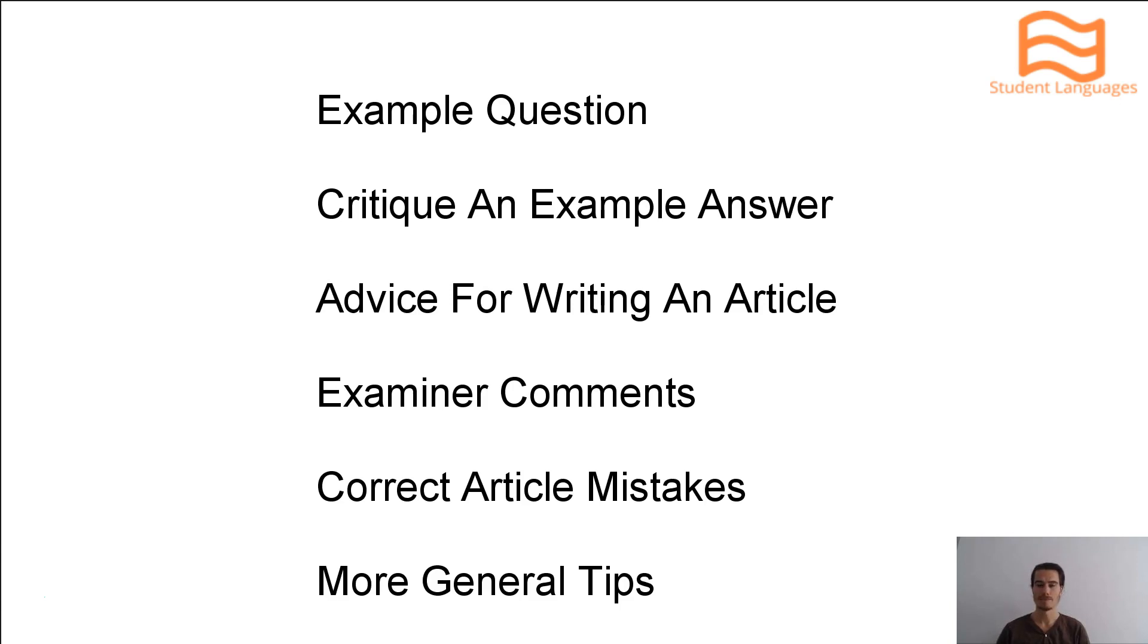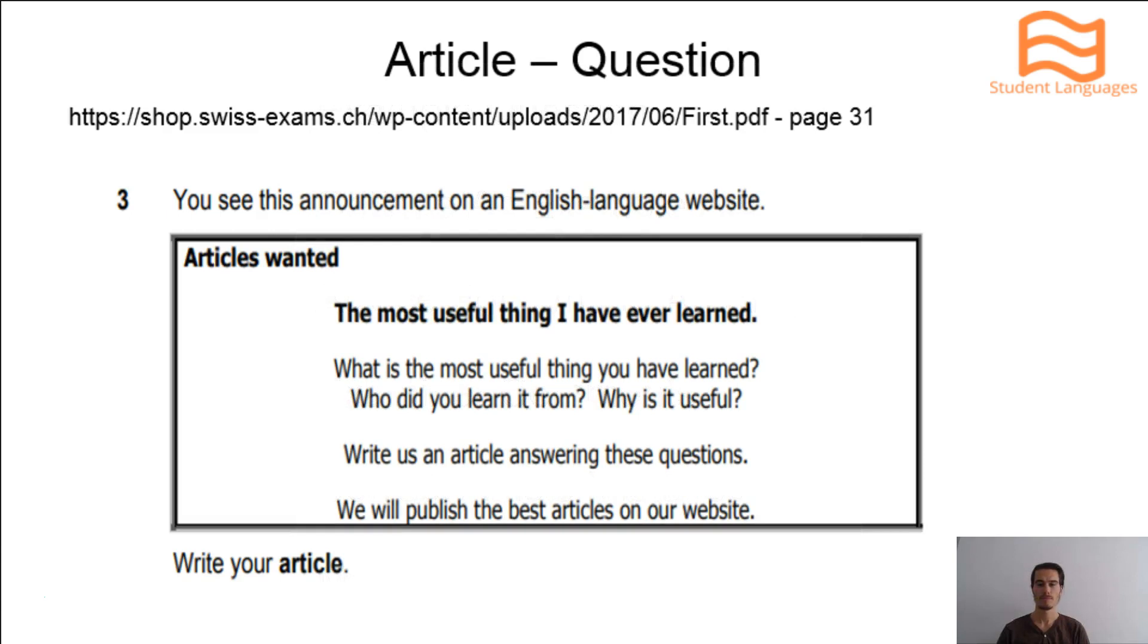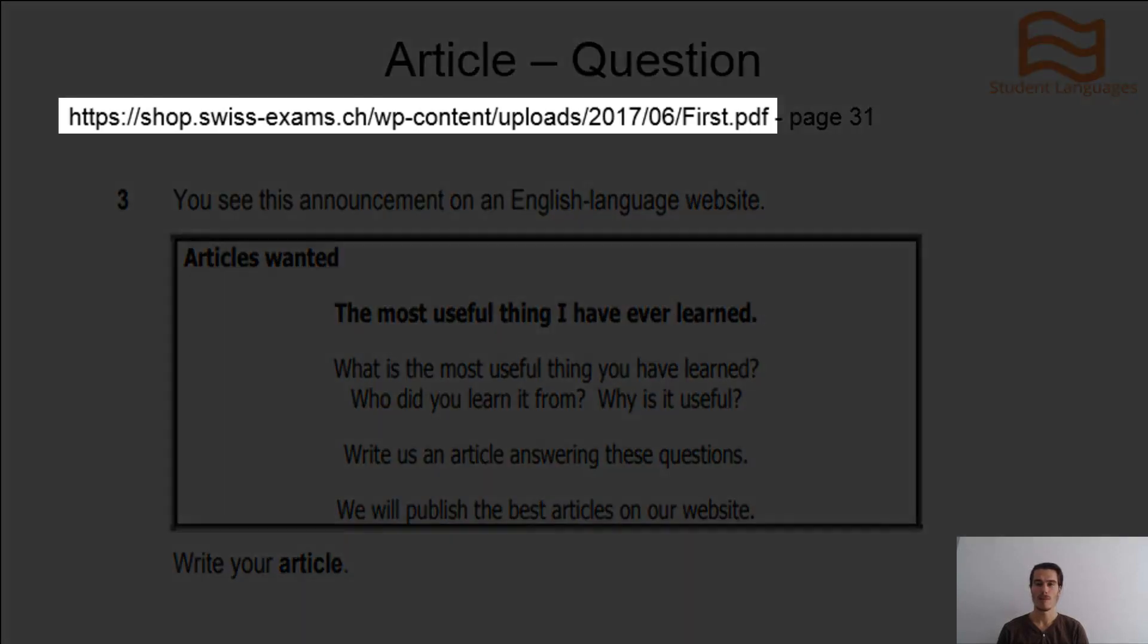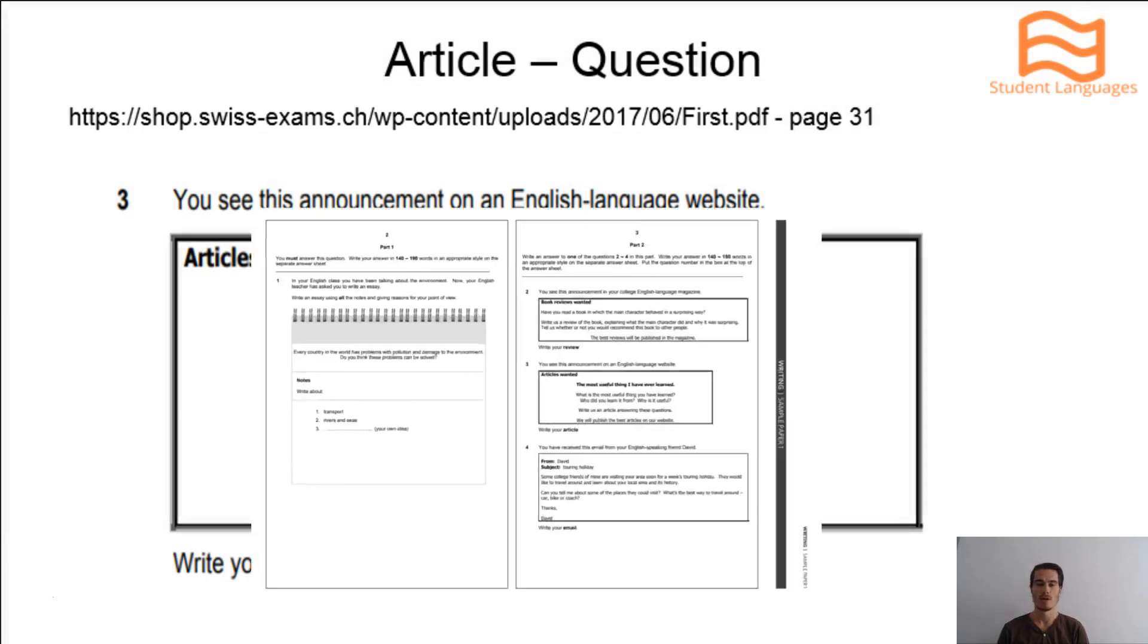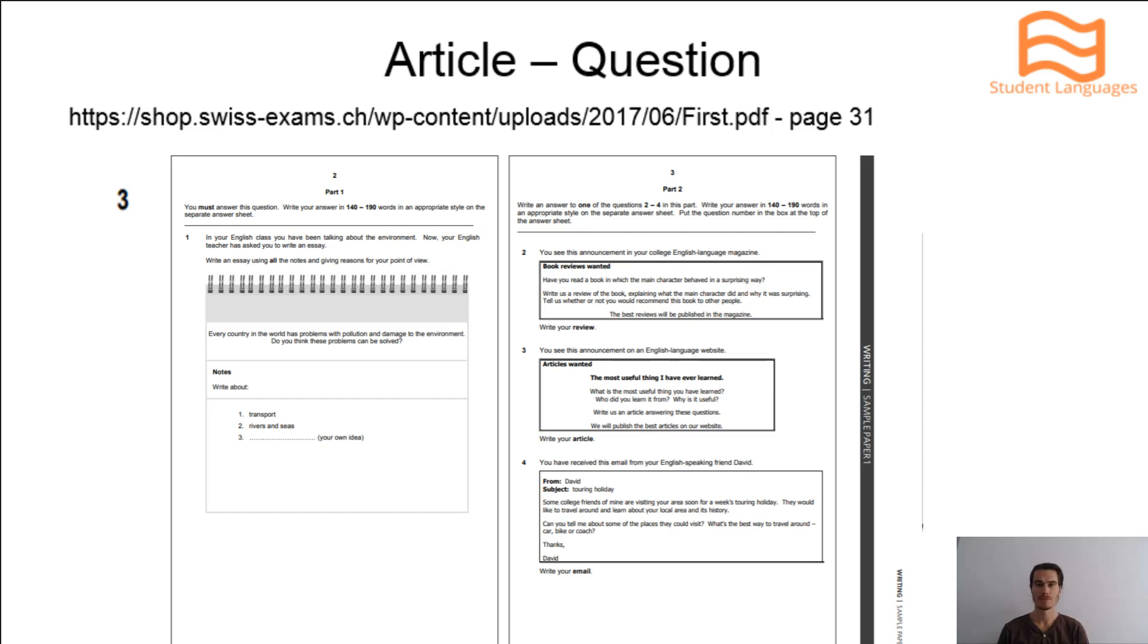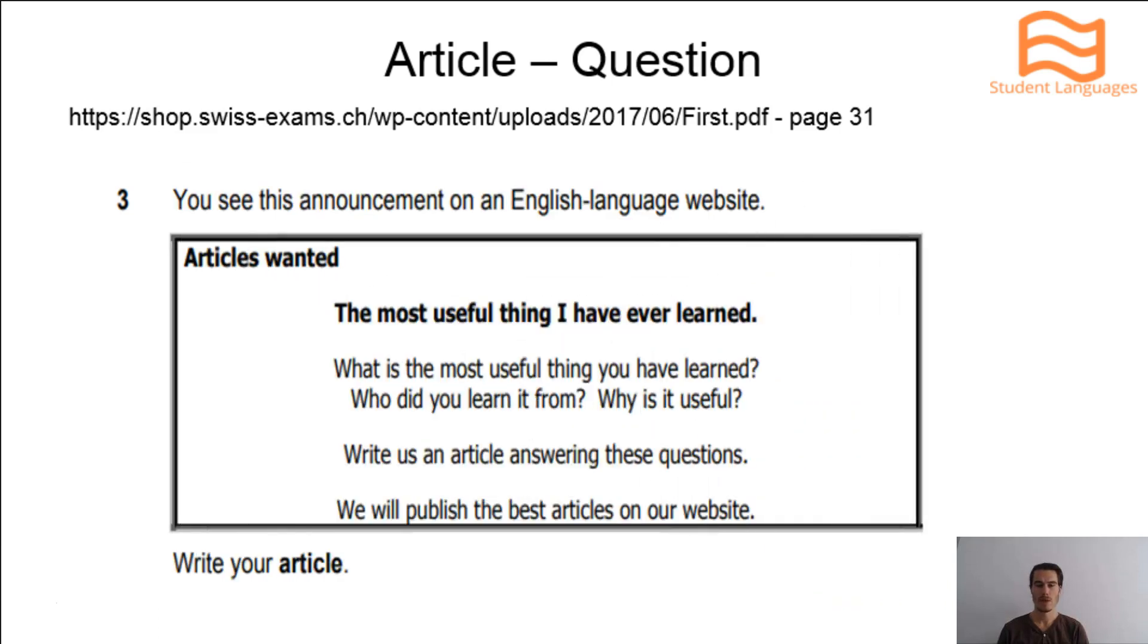So let's get started. Here is an example article question from the Cambridge English First Handbook for Teachers. If you type this address into your web browser and go to page 31, you will find a page which looks like this. You see this announcement on an English language website: Articles wanted. The most useful thing I have ever learned. What is the most useful thing you have learned? Who did you learn it from? Why is it useful? Write us an article answering these questions. We will publish the best articles on our website.